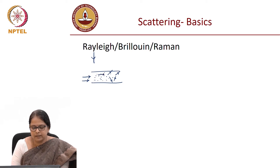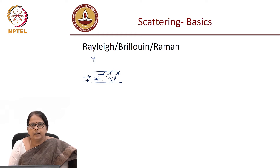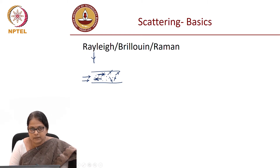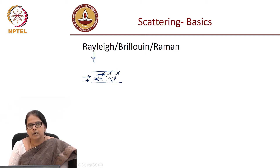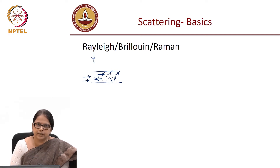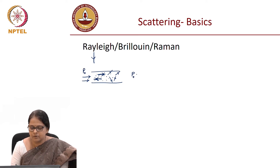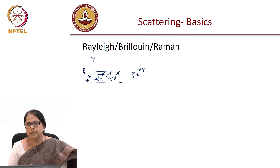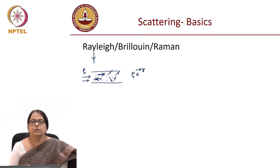One is in the forward direction, the other is in the backward direction. The scattered light gets captured either in the forward direction or in the backward direction. With the result that because some amount of light is lost in the backward direction, at the end of the fiber you have, if P naught is your input, you have only P naught e power minus alpha z. And this alpha quantifies the attenuation coefficient. This we have seen earlier.